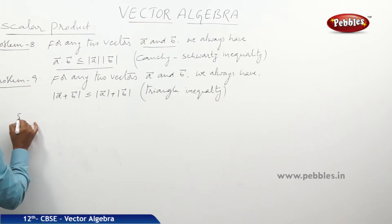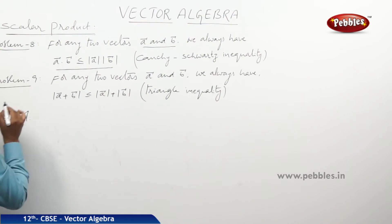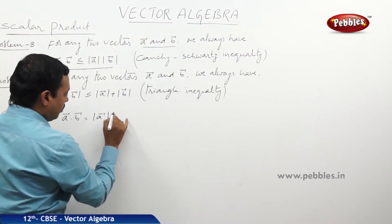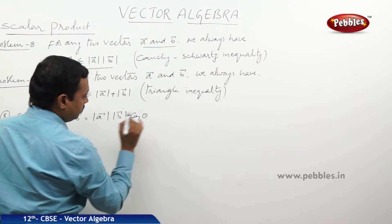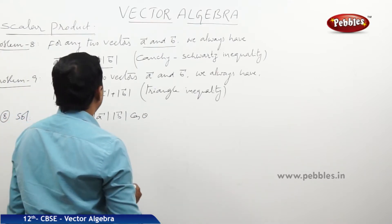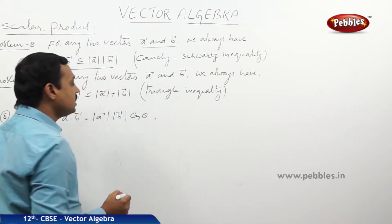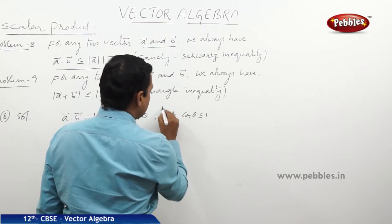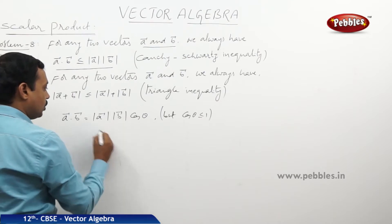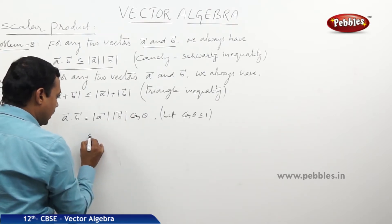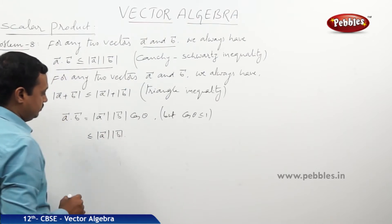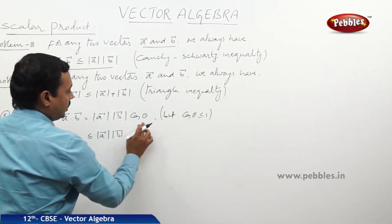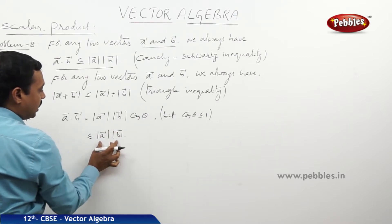Now let us prove this. We have a·b equal to |a||b|cosθ, by the definition of the dot product. But cosθ is always less than or equal to 1. Therefore, this product must be less than or equal to |a||b|, since |a||b|cosθ with cosθ at most 1 means the maximum value of the entire product is |a||b|.